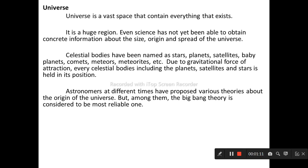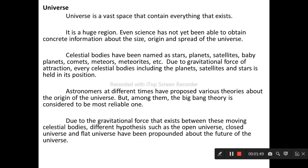There are some very vast celestial bodies in the universe. Their mass is also very large, but some celestial bodies are very small too. Some of them are in gaseous state and some are in solid state. Celestial bodies have been named as stars, planets, satellites, baby planets, comets, meteors, meteorites, asteroids. Due to the gravitational force of attraction, every celestial body including planets, satellites and asteroids is held in its position.